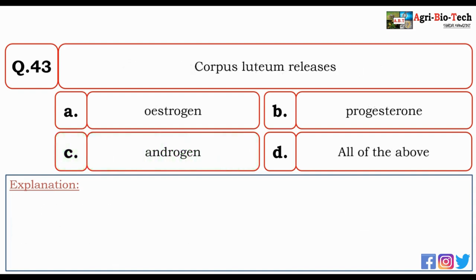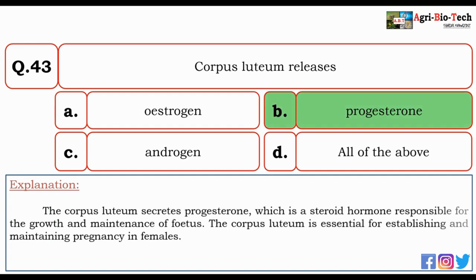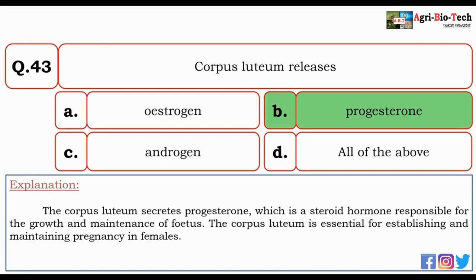Next question: corpus luteum releases — estrogen, progesterone, androgen, or all of the above? The correct option is B — progesterone. The corpus luteum secretes progesterone, a steroid hormone responsible for the growth and maintenance of the fetus. The corpus luteum is essential for establishing and maintaining pregnancy in females.